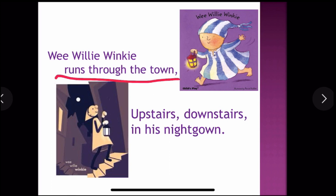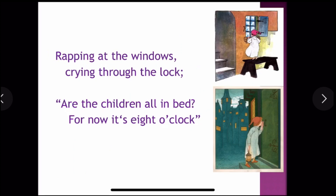Upstairs and downstairs in his nightgown. So he is going upstairs and then downstairs in his nightgown. He is also rapping at the window and crying through the lock. But why is he crying out, and what is he crying?